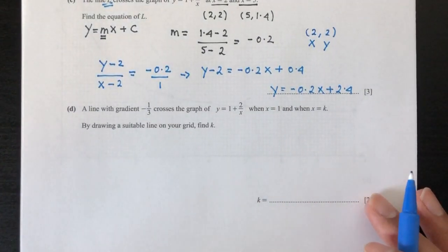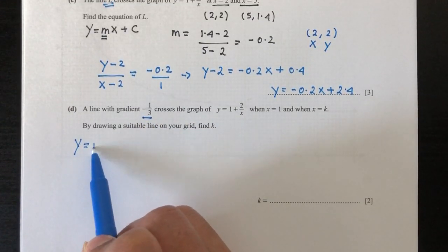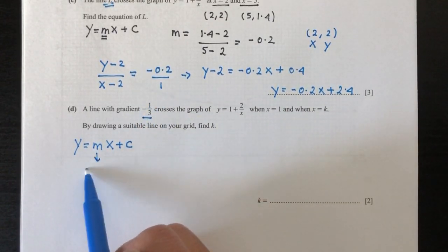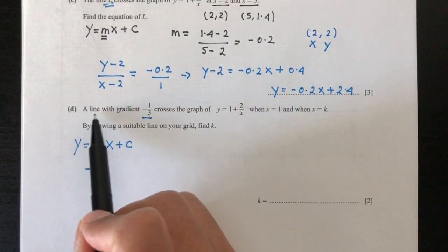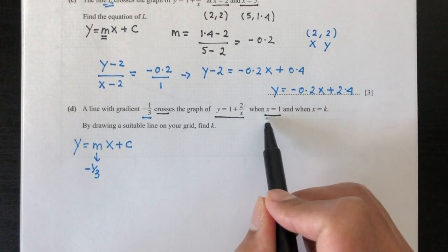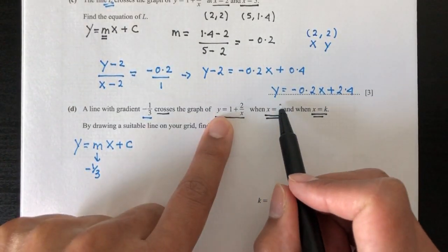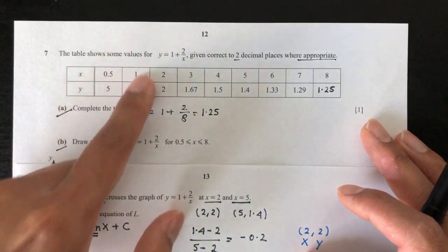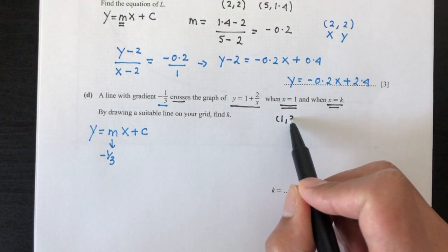Now for part d, we have a line with gradient equal to this. So equation of a line is y = mx + c. Now this is given to you already. m is -1/3. That is the first information given to you. Now this line also crosses the graph of y, where x equals 1 and x equals k that we don't know, but we know this one. So based on this graph, when x equals 1, what is the value of y? Going back to your table, x is 1, y is 3. So the passing point will be (1, 3).